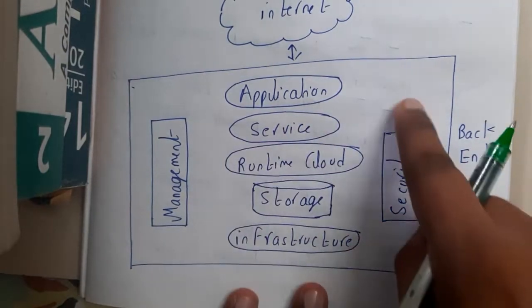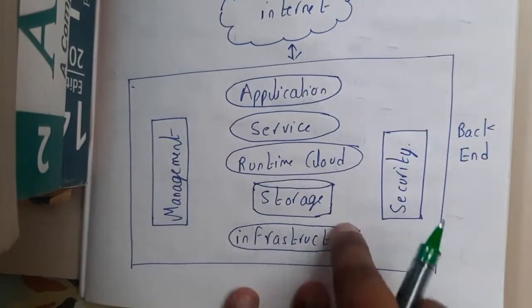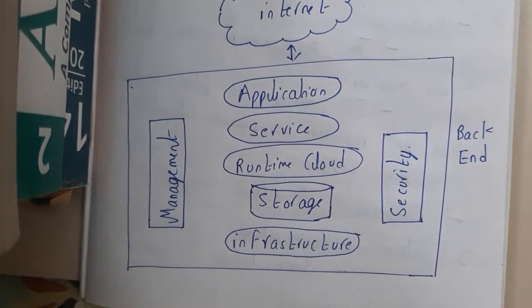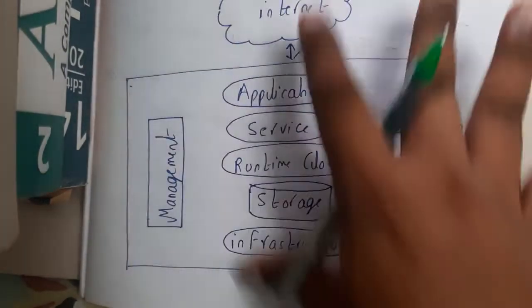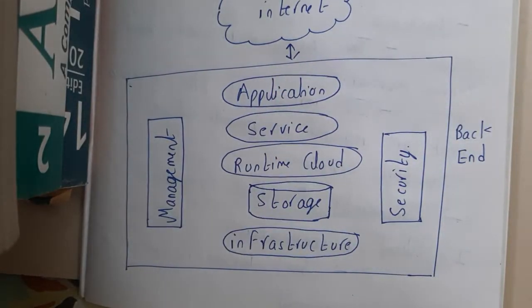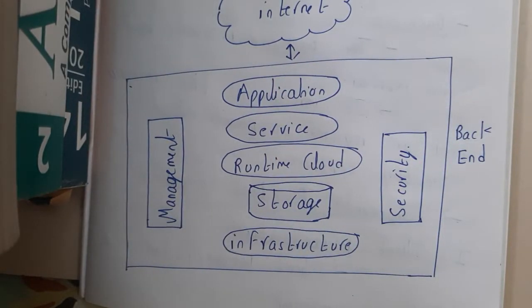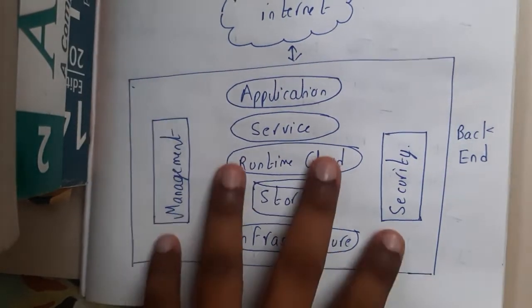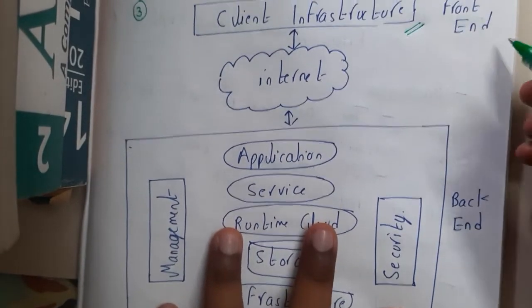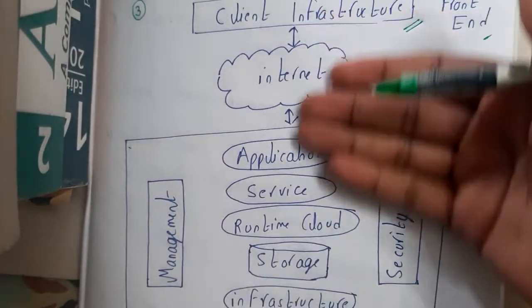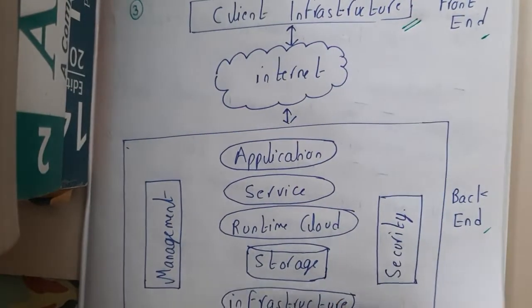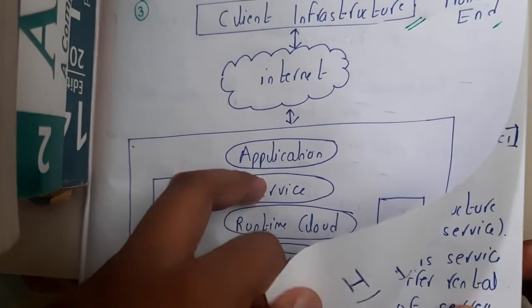These are some components of your cloud. We'll be discussing about each and every component, so don't worry. This is the basic cloud computing architecture. Firstly, let us go through the front end and back end definitions, after which we'll move on to the other things.